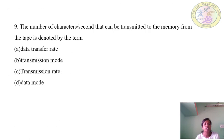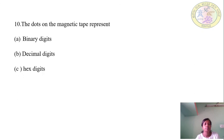Question 9: The number of characters per second that can be transmitted to memory from tape is denoted by the term — Answer: A — Data transfer rate. Question 10: The dots on the magnetic tape represent — Answer: A — Binary digits.